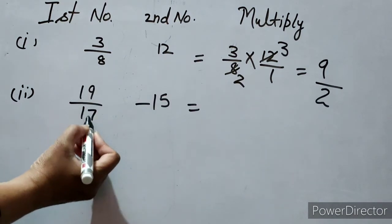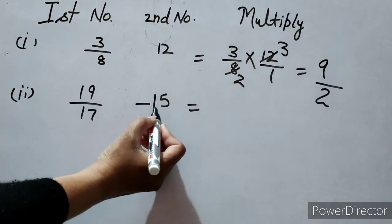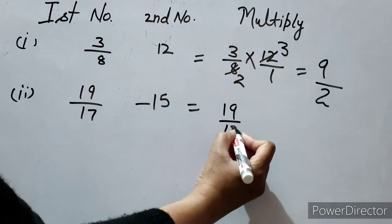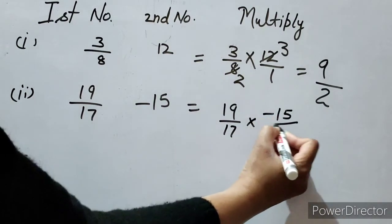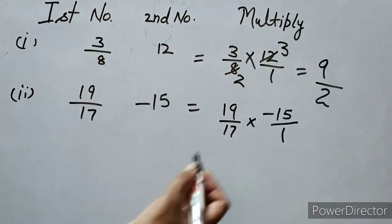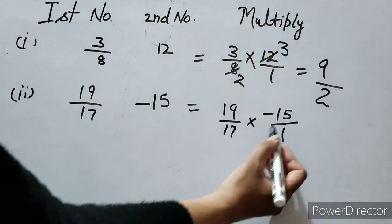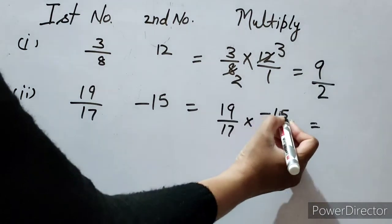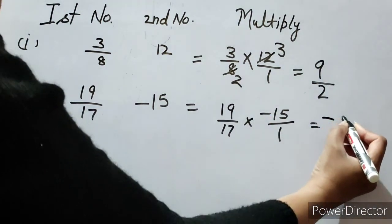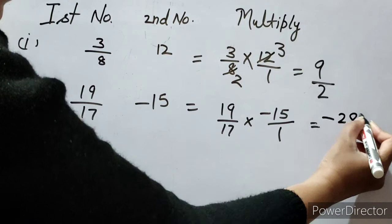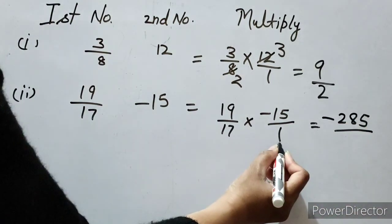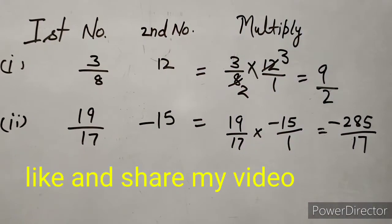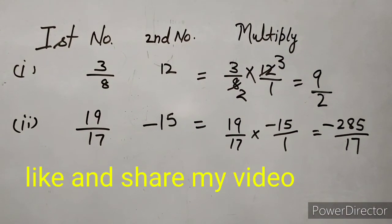Let's take one more example. The first rational number is 19 over 17 and the second is minus 15. Since minus 15 is an integer, we write 1 in its denominator: 19 over 17 multiplied by minus 15 over 1. Numerator multiplied by numerator: 19 multiplied by minus 15 gives minus 285. Denominator multiplied by denominator: 17 multiplied by 1 gives 17. So the answer is minus 285 over 17.